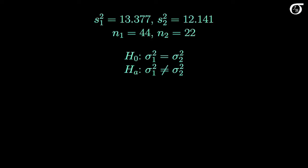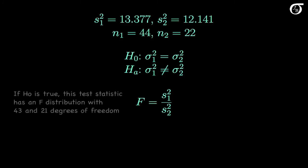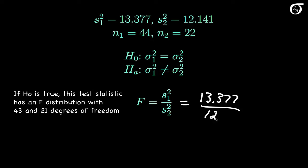Under normality, the appropriate F test statistic is the ratio of sample variances. And if the null hypothesis is true, and the populations are normally distributed, this test statistic has an F distribution with n1-1 and n2-1 degrees of freedom. The observed value of the test statistic is 13.377 over 12.141, which, to three decimal places, works out to 1.102.